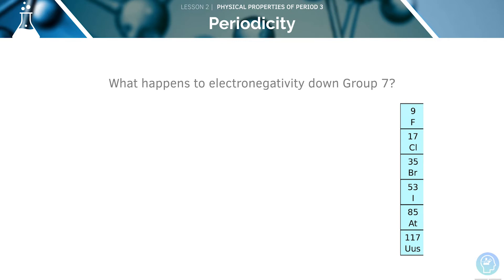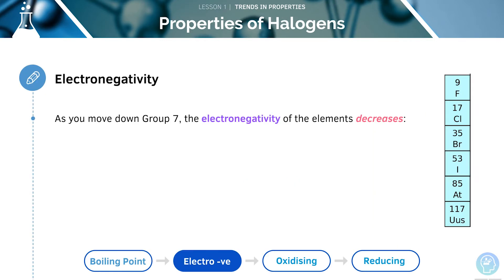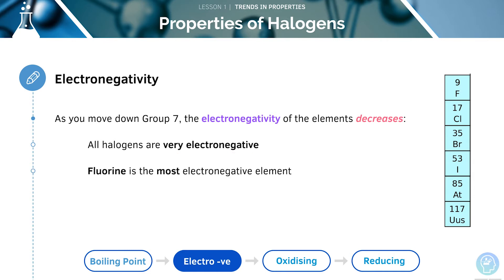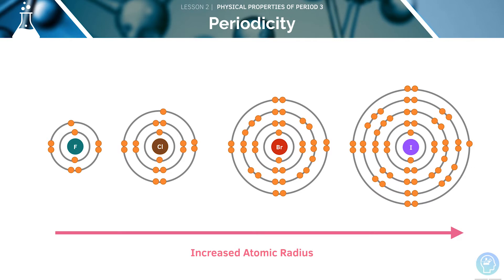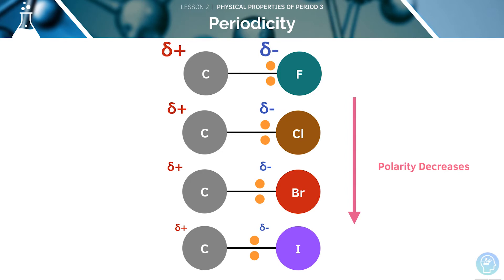What happens to the electronegativity down group seven? It will decrease as we move down the group. All the halogens are very electronegative, with fluorine being the most electronegative element. As you move down the group, the atomic radius of the elements increases. Therefore, this is due to an increased shielding effect. This means that there is a reduced attraction between the atoms and therefore the electronegativity will decrease. Here we can see a decrease in the polarity of the carbon-halogen bond from fluorine to iodine.